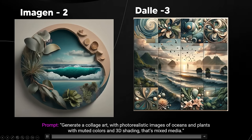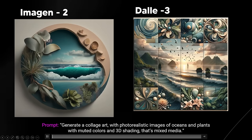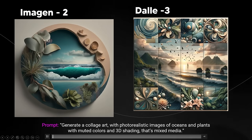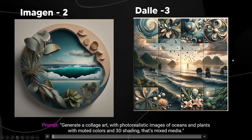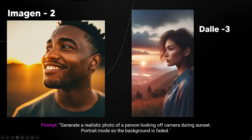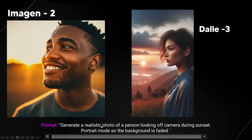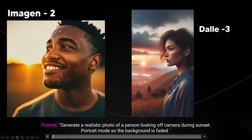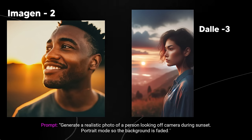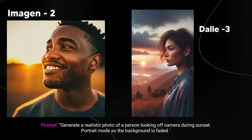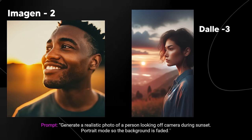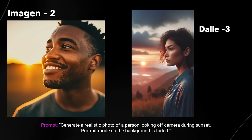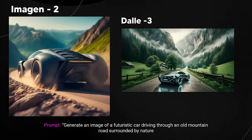We'll see when DALL-E 4 drops. There are different interpretations of what 'collage' means between the two models. For the futuristic car driving through old mountains surrounded by nature, DALL-E 3 does look a little better — that's fine. For Buffalo wings, Google's version looks really realistic while DALL-E 3's doesn't look as realistic. They have different artistic interpretations overall.